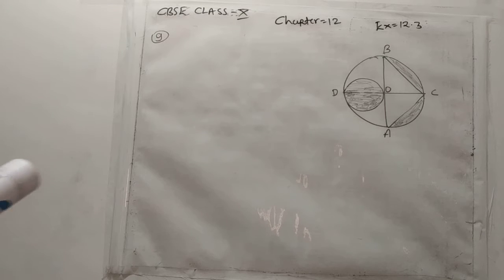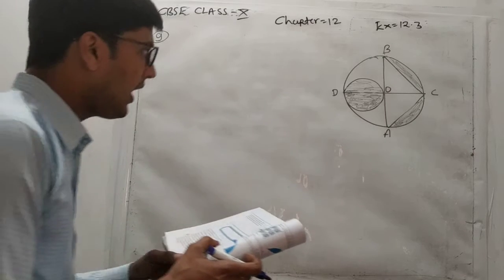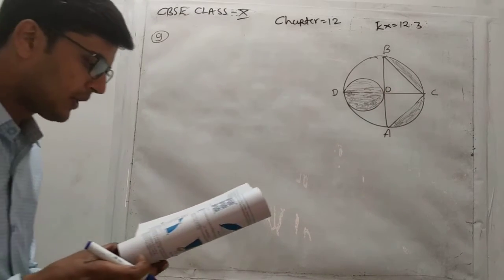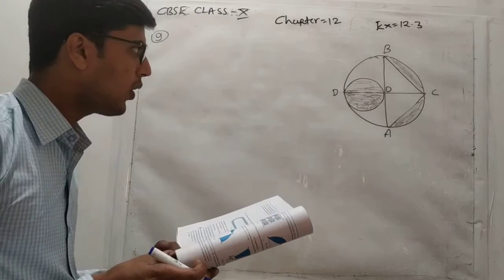Now question number 9 is: In figure 12.27, AB and CD are two diameters of a circle with center O, perpendicular to each other at OD.